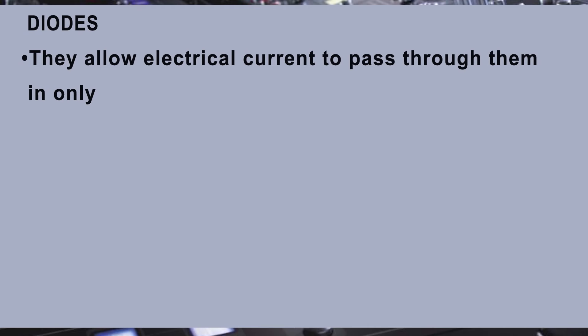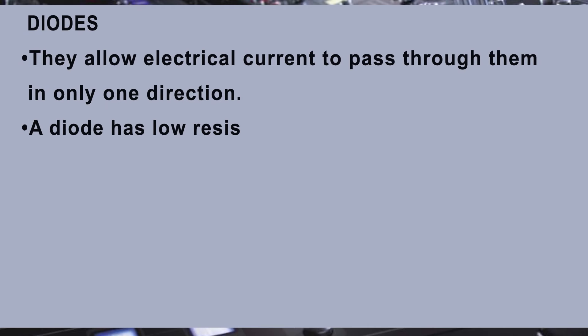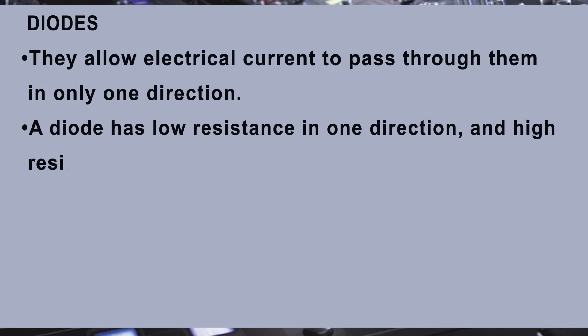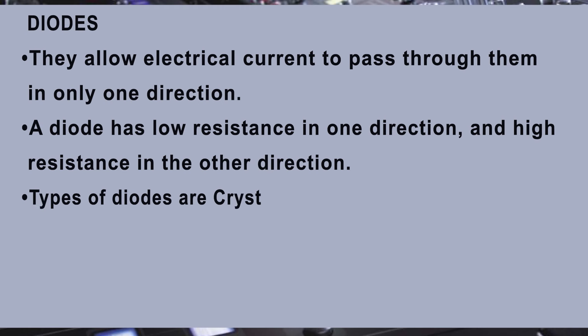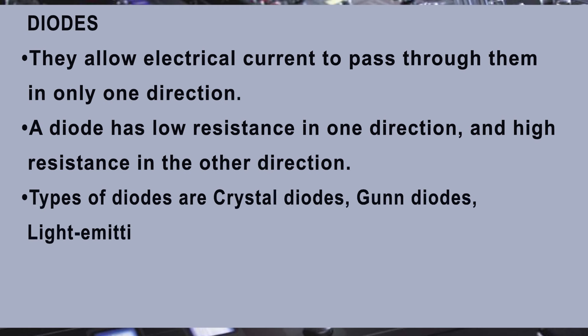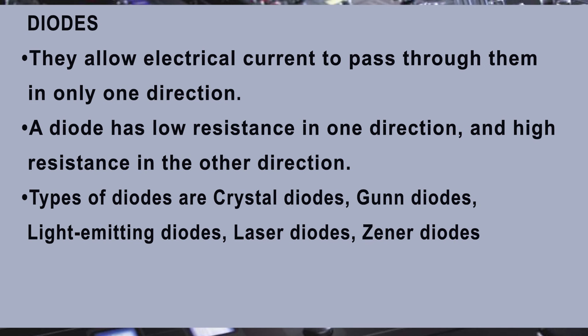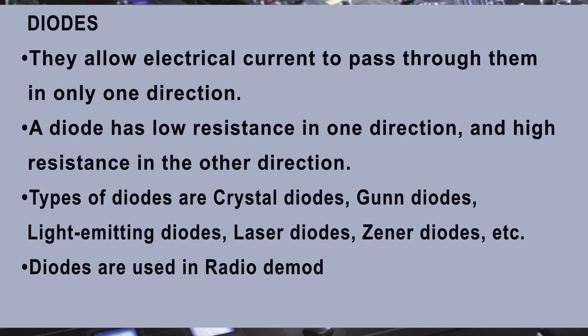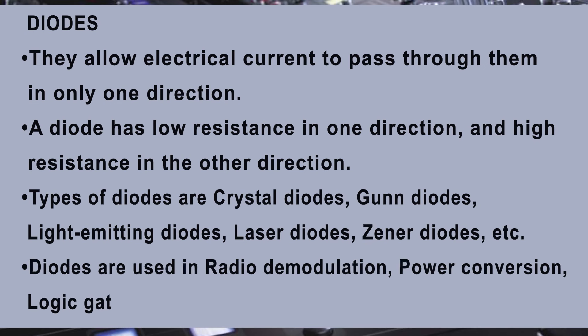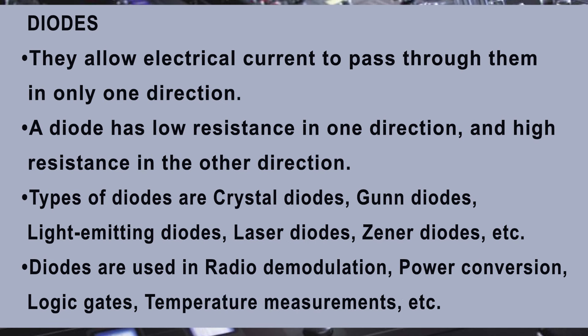Diodes allow electrical current to pass through them in only one direction. A diode has low resistance in one direction and high resistance in the other direction. The types of diodes are crystal diodes, Gunn diodes, light emitting diodes, laser diodes, Zener diodes, etc. Diodes are used in radio demodulation, power conversion, logic gates, temperature measurements, etc.